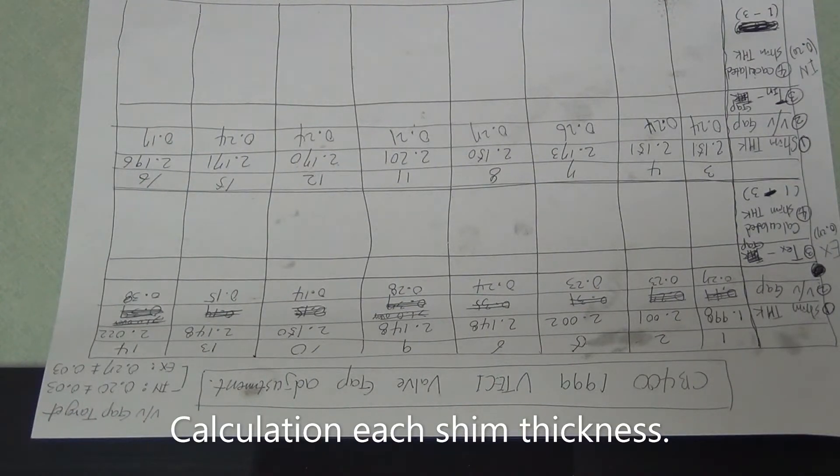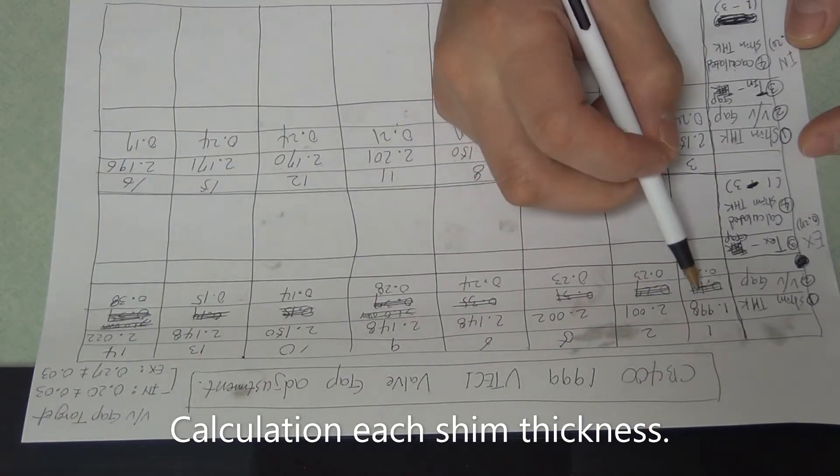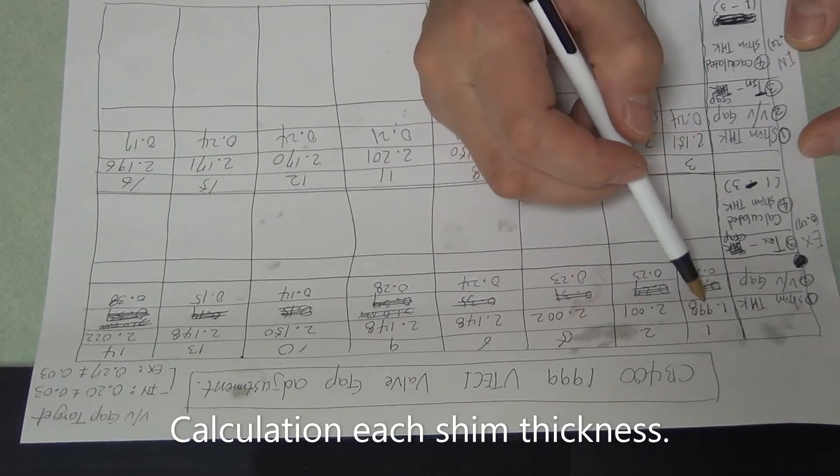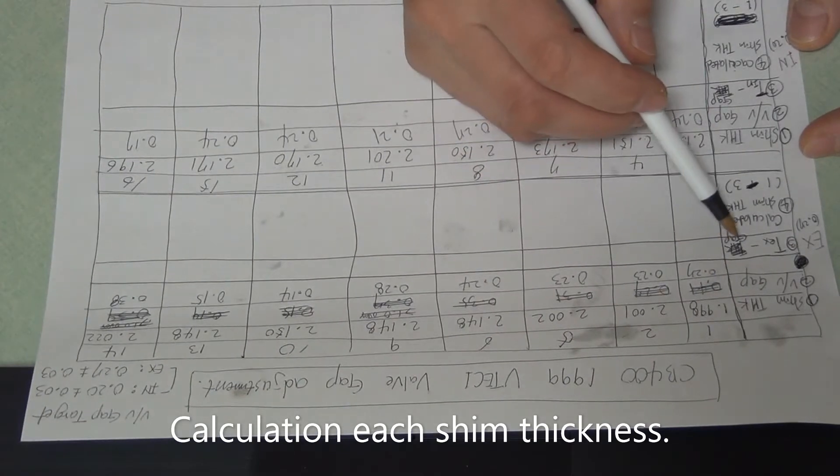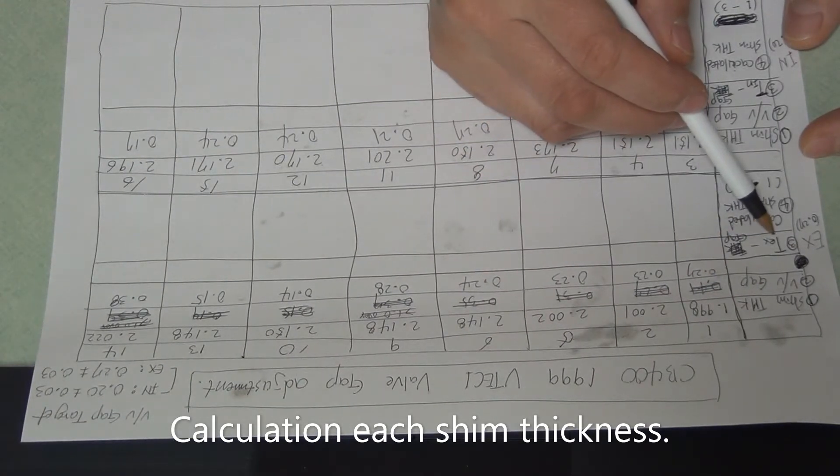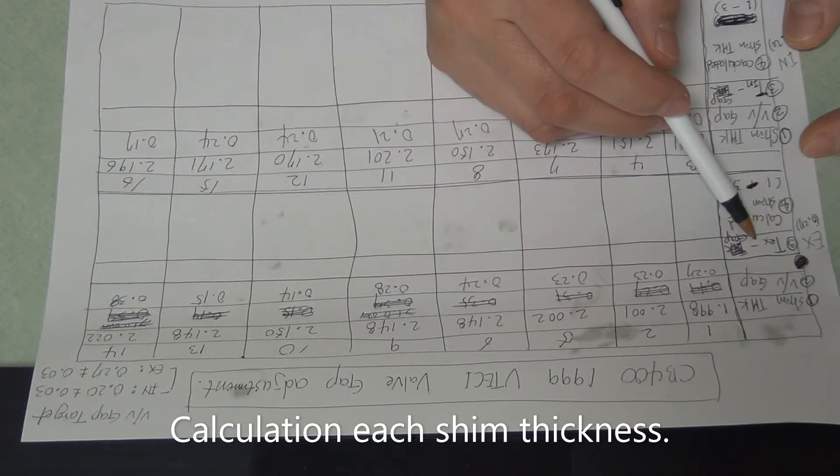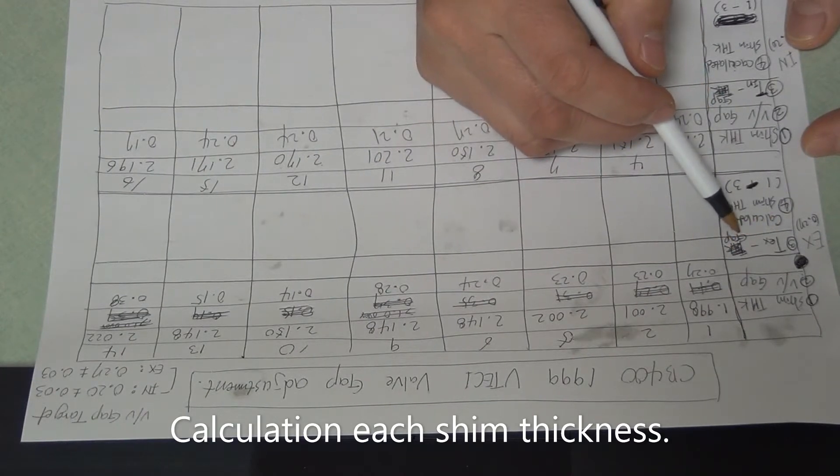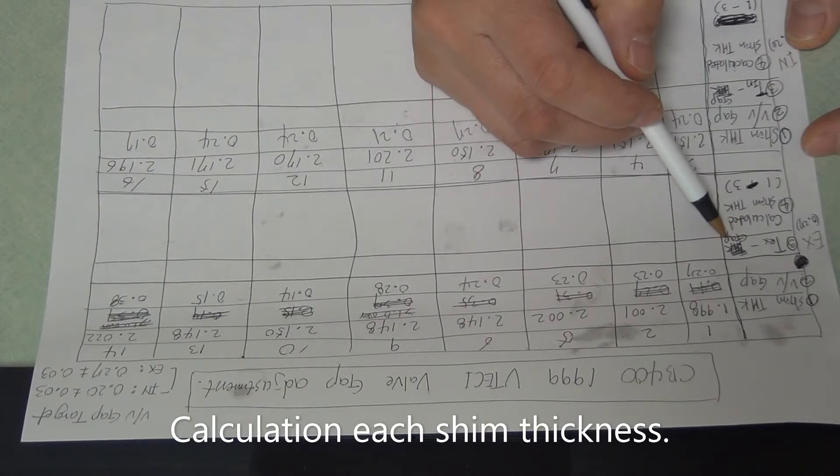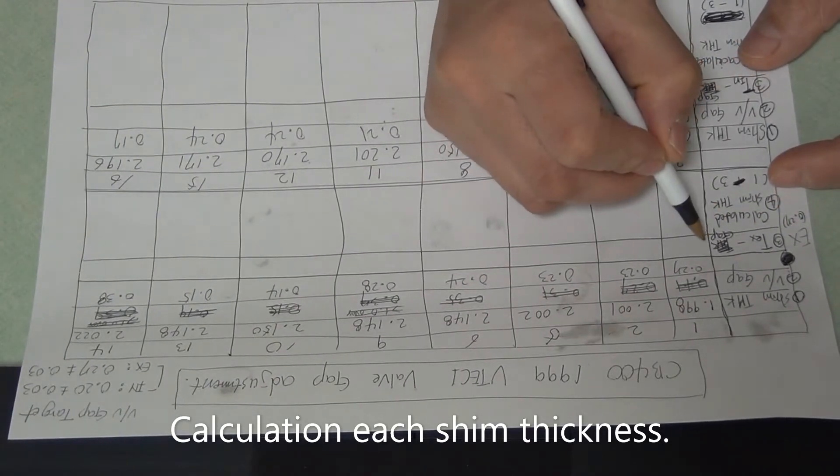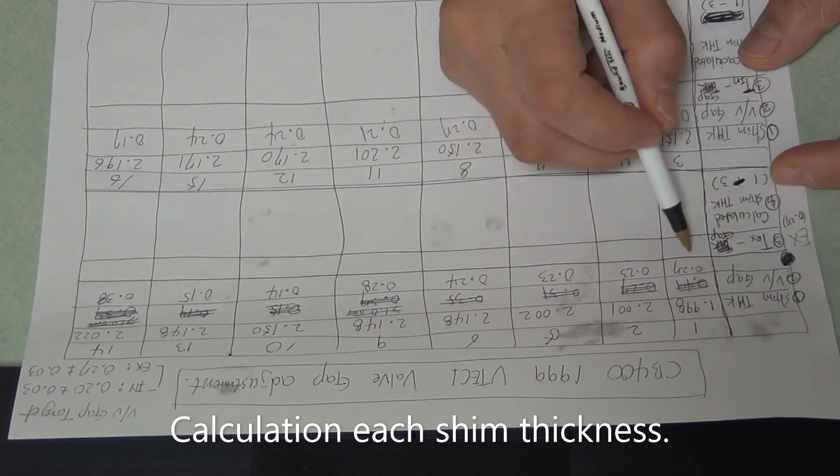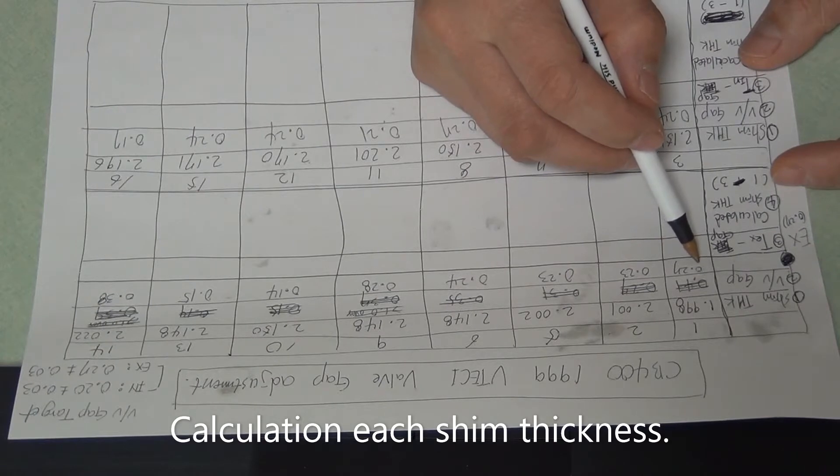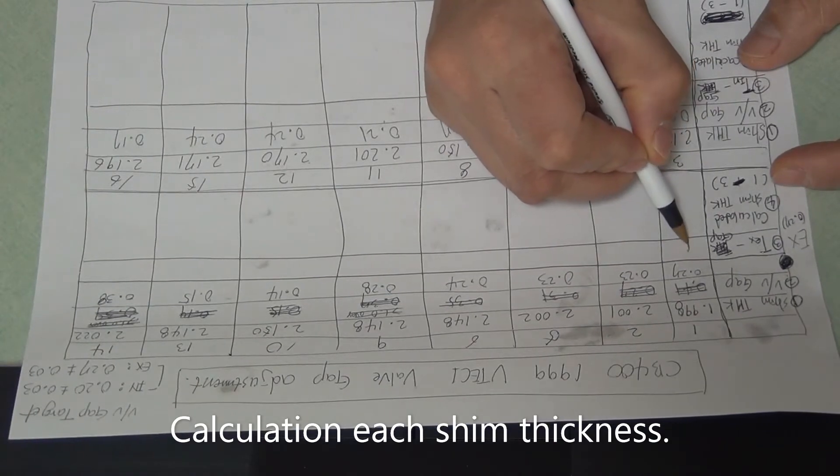Okay, calculation shim thickness, valve gap. If you just put target gap minus measured gap. So target is 0.27 minus measured gap is 0.27, so this is 0.